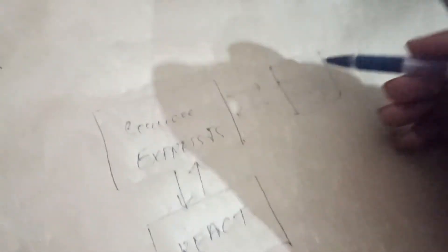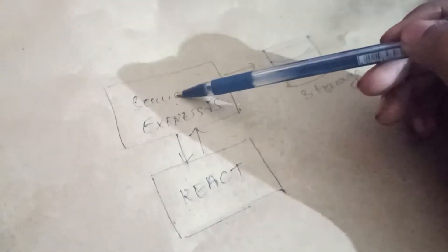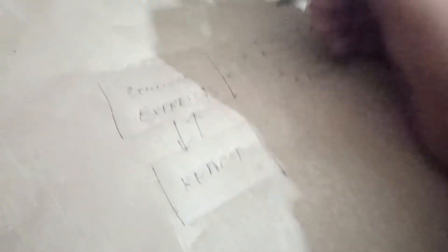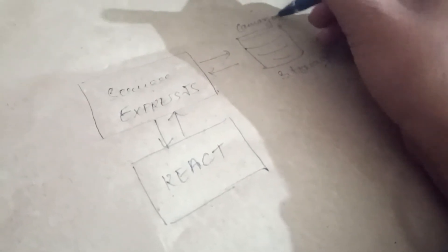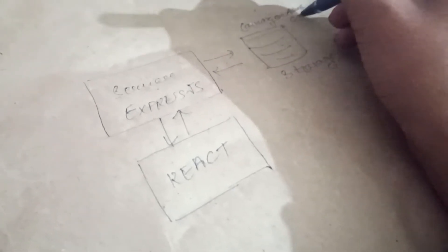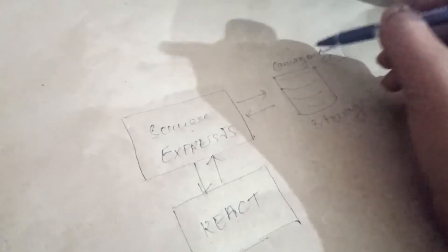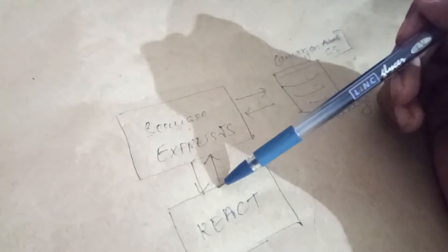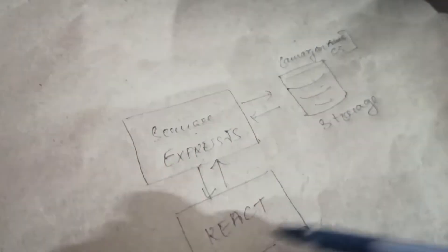That looks like a database but it's actually storage. There are two options: store data directly on the server, which can be costly and inefficient, or use a storage service. I'll be using Amazon S3 for storage, ExpressJS for the server, and React for the front-end. That's the current structure.